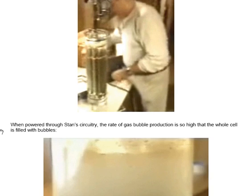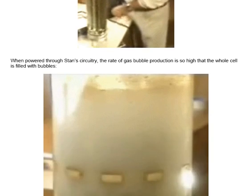Using pipes which are 15 inches long makes a cell which looks like this when valves, a filler cap, and a pressure gauge are attached to it. Stan is just finishing filling up the container with water. It's a tall container compared to its width. When power is applied through its circuitry to those pipes, the rate of gas bubble production is so high that the whole cell is filled with bubbles, and that obscures everything else that's inside the cell.